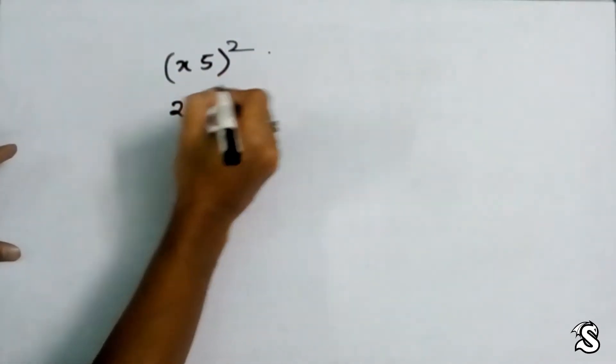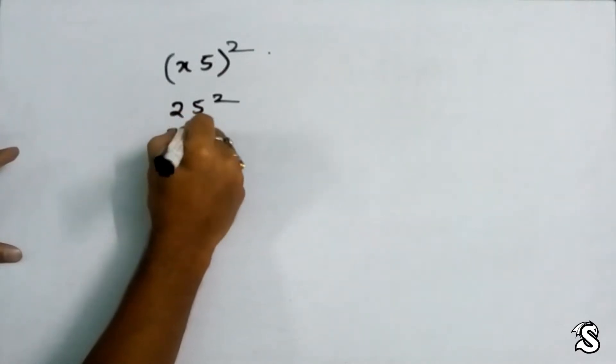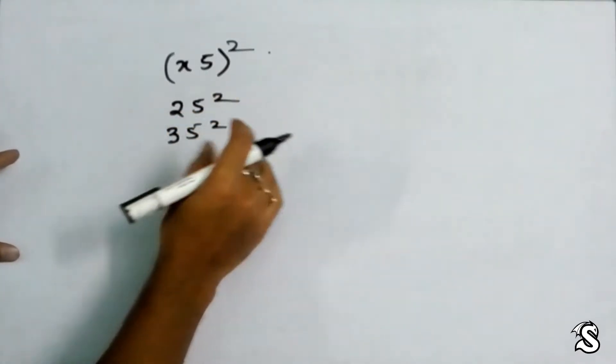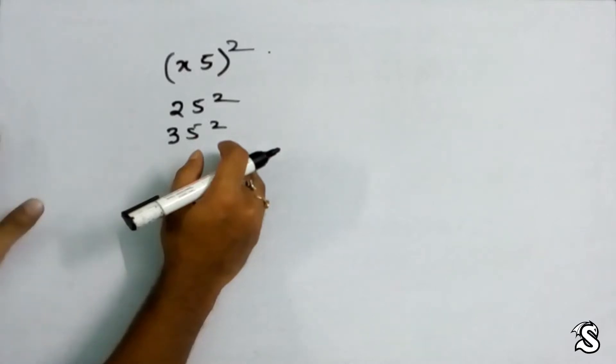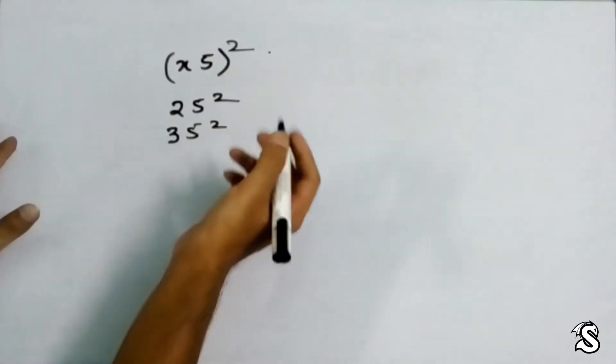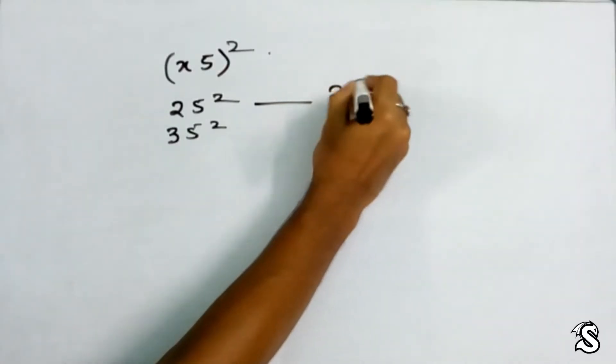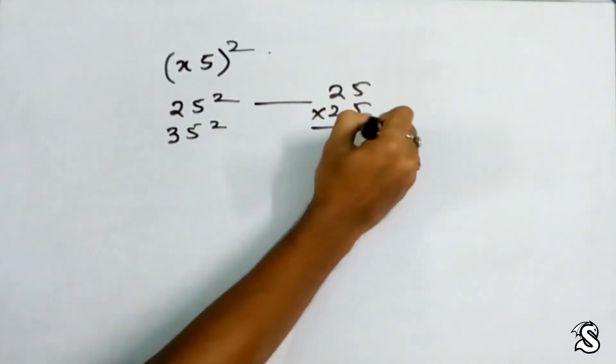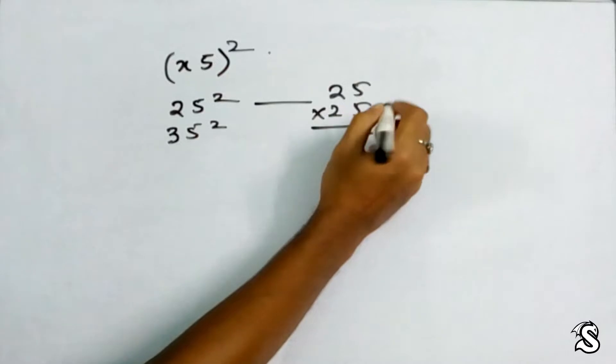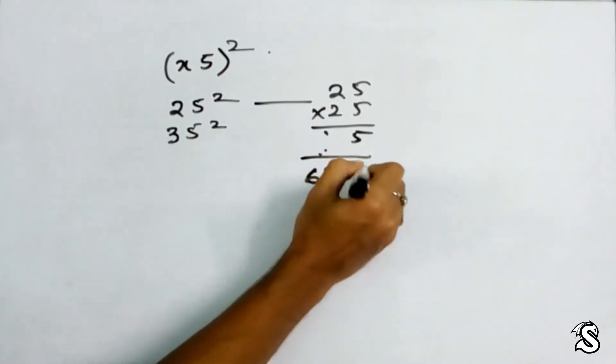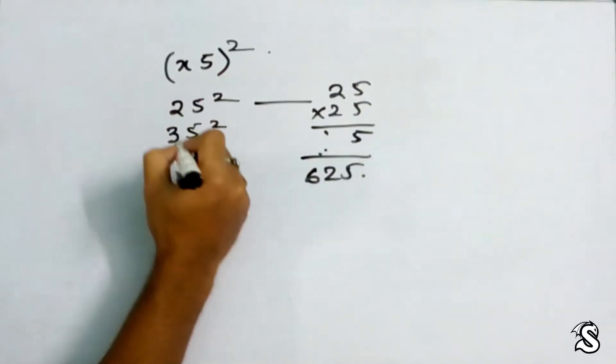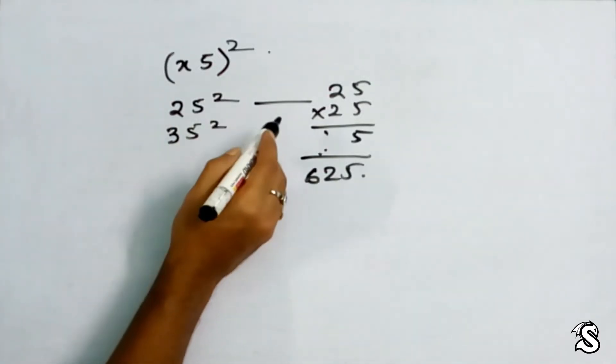35 square, and the main point is we're going to do it without any multiplication. Like we can do 25 into 25, then 5 times 5, 5 times 2, and find it's 625.